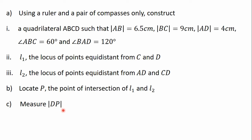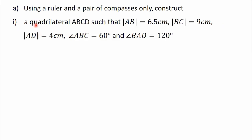So this is our question. We are going to solve the first part in this video and we will solve the remaining parts in the next video. So let's begin by constructing the quadrilateral ABCD. We have been given the dimensions of side AB, side BC, and side AD. We have also been given two interior angles, angle ABC and angle BAD.